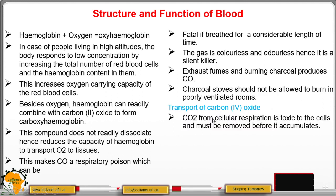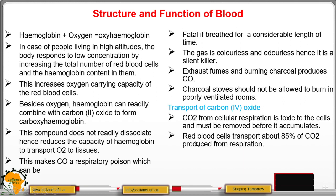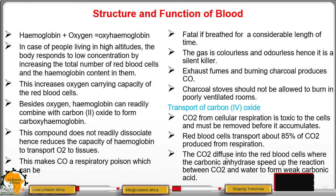Carbon dioxide is a product of respiration and is poisonous to cells if left to accumulate. Red blood cells transport about 85 percent of this gas. It diffuses into the red blood cells where the enzyme carbonic anhydrase speeds up the reaction between carbon dioxide and water to form weak carbonic acid.